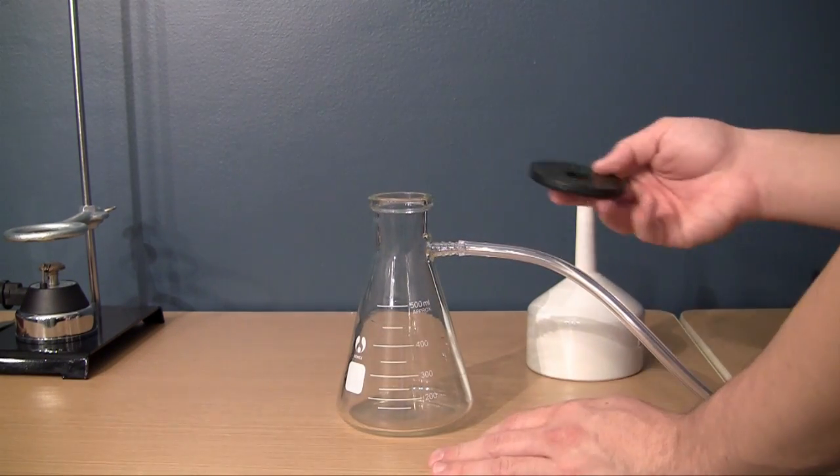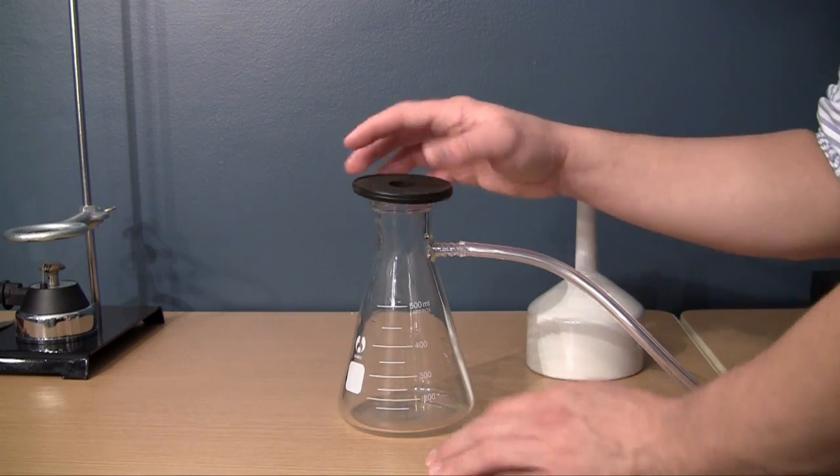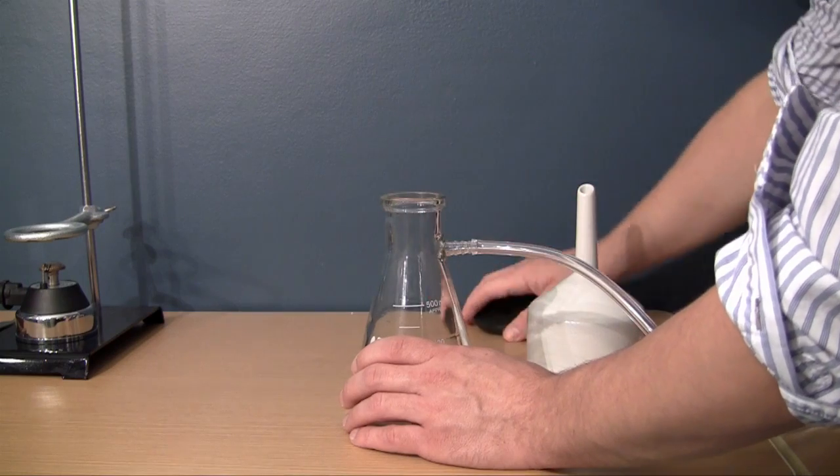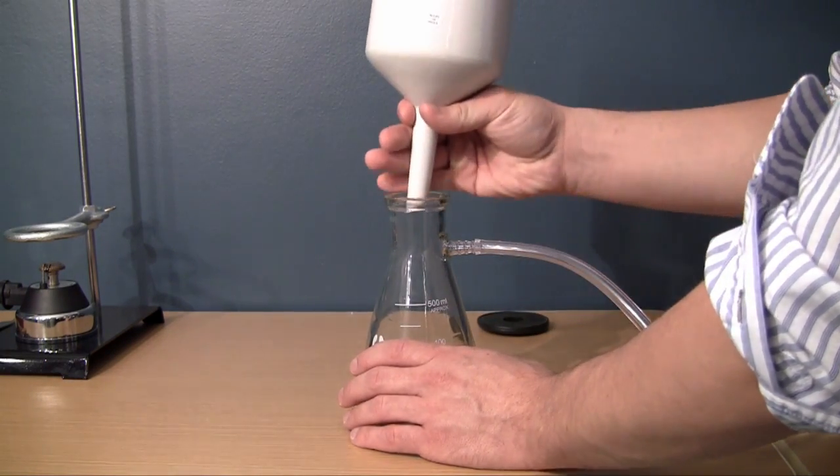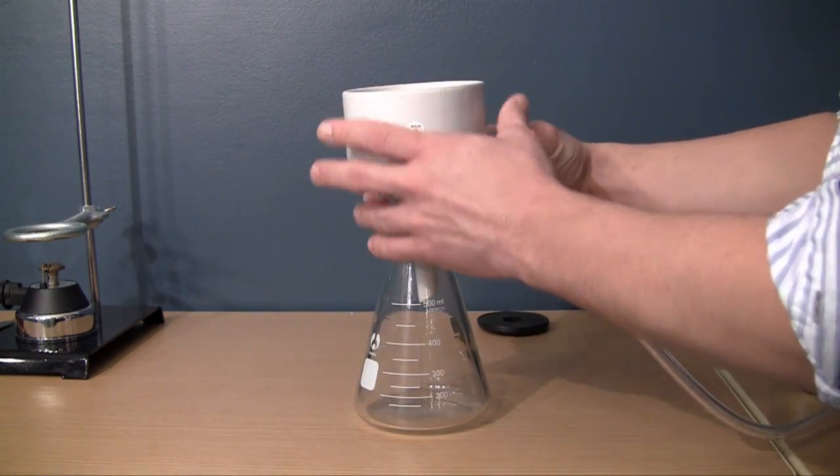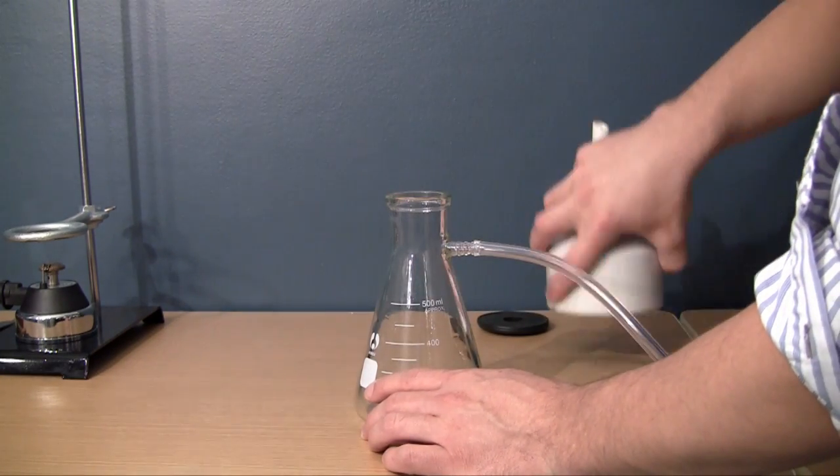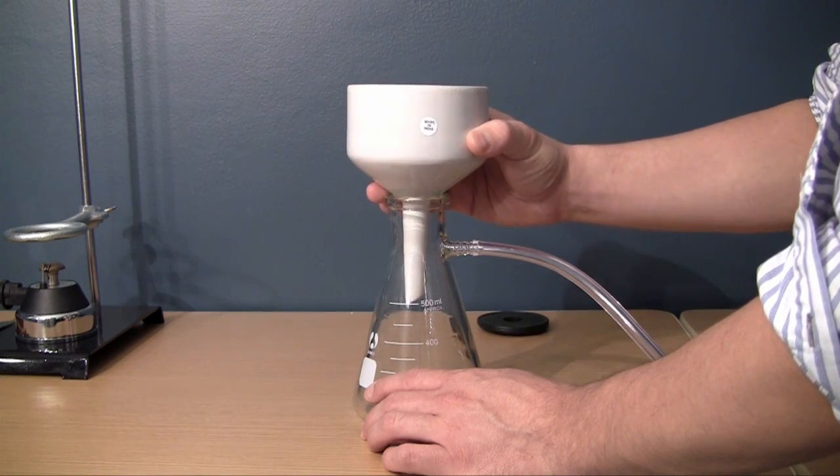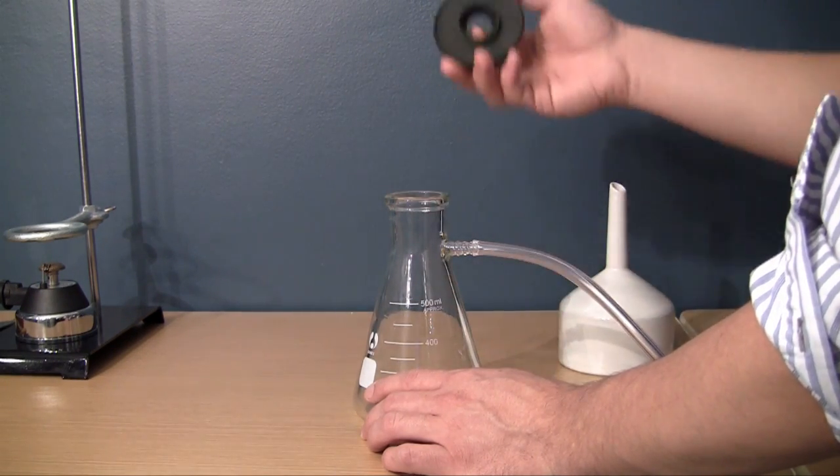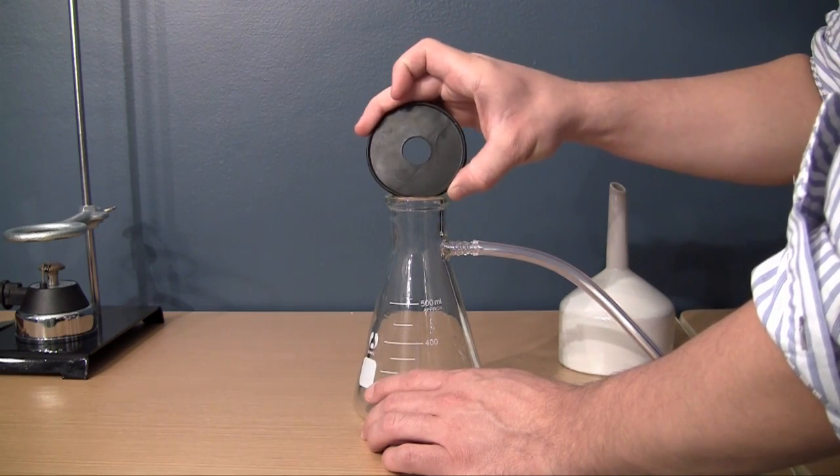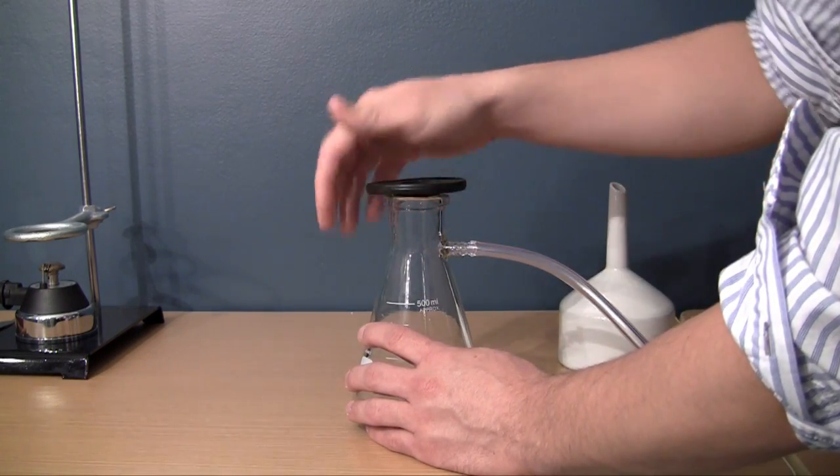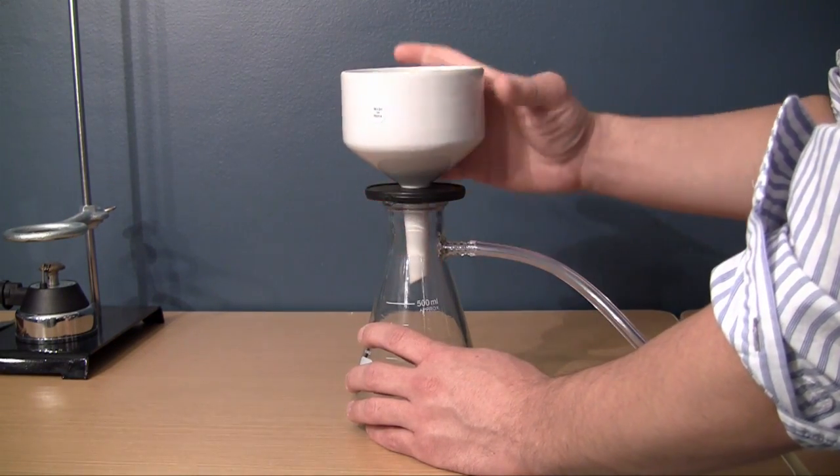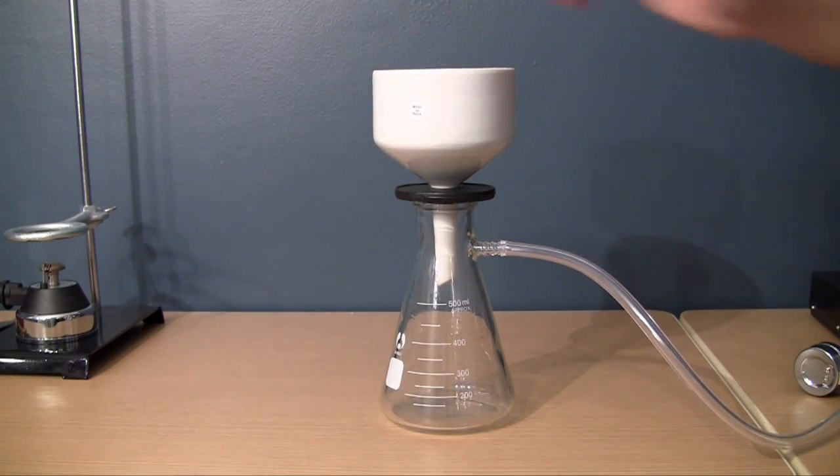So after that, go ahead and take your rubber stopper and put it right on your filtering flask like that. Now you put this on because what we're essentially going to do is we're going to add the funnel on top. So it makes the solution easier to go in the flask. However, if you just have it like this, it's going to be really loose. And we don't like loose things, of course. So what we need to do is we need to use a special stopper that pretty much came with the kit. So go ahead and put that on. And then go ahead and put your funnel on just like that. And look at that, nice and tight, beautiful.